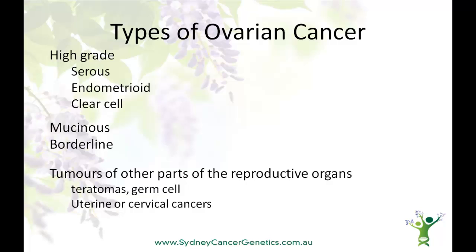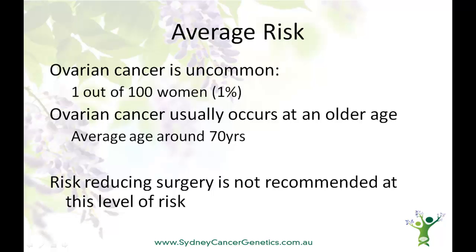Uterine and cervical cancers are not the same as ovarian cancer. So what is an average woman's risk of ovarian cancer? It's actually very low — only around 1% over a lifetime — and most ovarian cancers occur at an older age, around about age 70. Risk-reducing surgery is not recommended at this level of risk, as the surgery itself, while quite safe, may cause more harm than good.